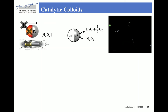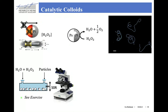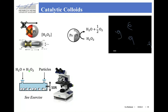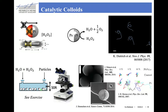Experiments with these particles are very simple: sputter some platinum onto one hemisphere of the colloid, put them into a water-hydrogen peroxide solution, let them sediment onto the bottom substrate of an observation cell, and look at how they move using a conventional microscope. The particles are faster and faster as we increase the hydrogen peroxide concentration.